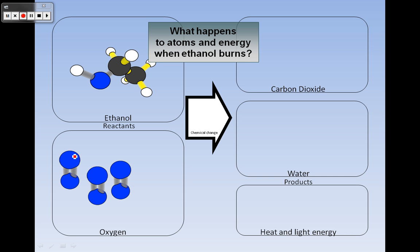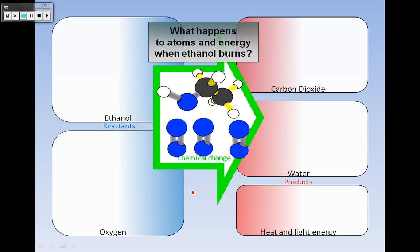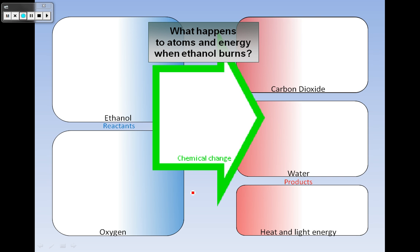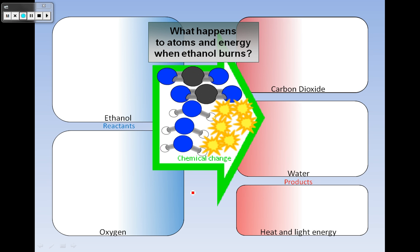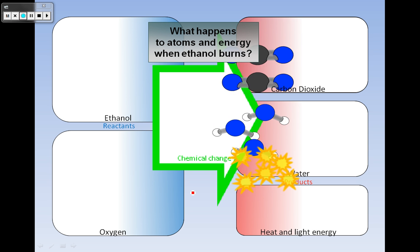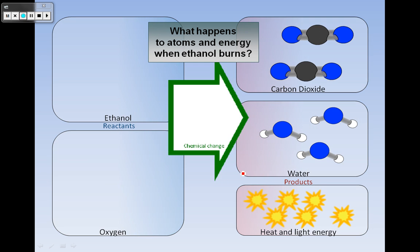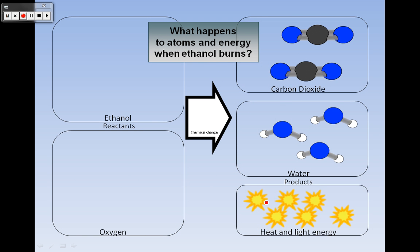And so in this chemical change what we have are these kind of rearranging themselves. And so they all go into the reaction and in there the bonds break apart, they reform, and when they reform we get out more energy than it took to break them apart. So that's an exothermic reaction right, more energy was released when the water and carbon dioxide formed than we needed to break the oxygen and ethanol apart.